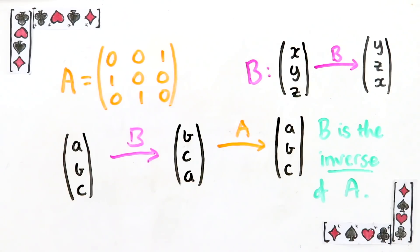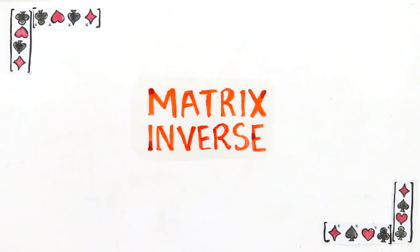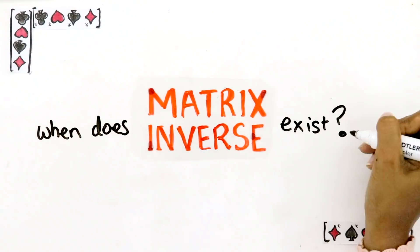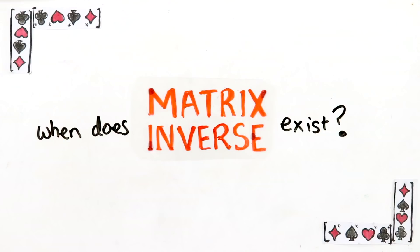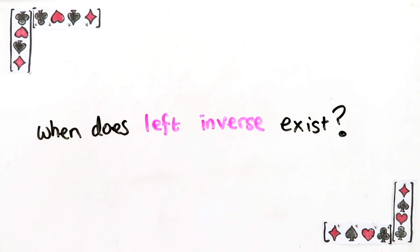Now that we know what an inverse is, let's think more about when they exist and don't. Again, it's going to be more convenient to look at when a left inverse exists first.